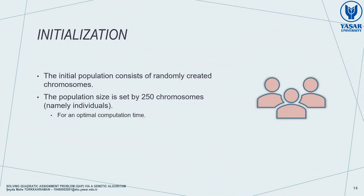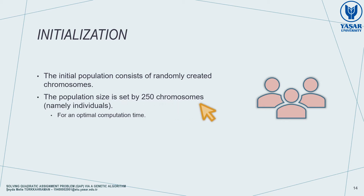We initialize the population with randomly created chromosomes. The population size is set to 250 chromosomes, namely individuals, by taking into consideration the computation time to be optimal.